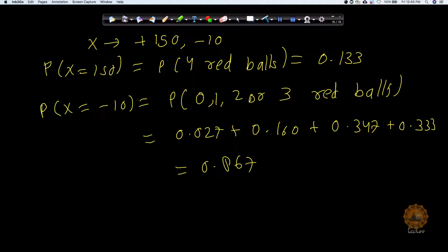The probability that X is equal to minus 10 means when he's going to lose. So that is going to be either the expected value was 0 or 1 or 2 or 3, right? This number of red balls. So this probability is, let's add it up. I will get the probability for random value going to be minus 10 is 0.867. Let's go ahead and see a few more things.